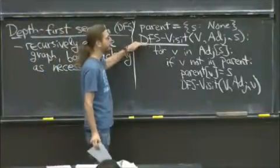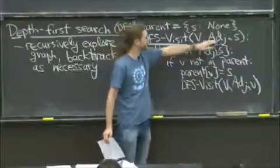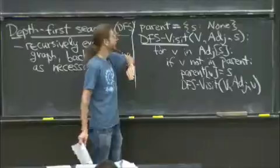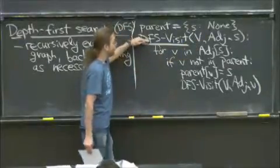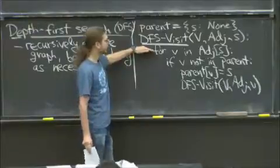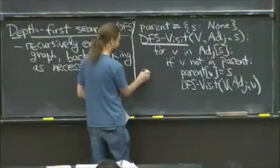This will visit all the vertices reachable from a given source vertex s. So we're given the adjacency list. I don't know why I put v here, you could erase it, it's not necessary. And all we do is we have a vertex s.